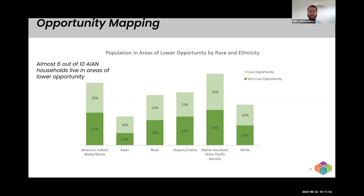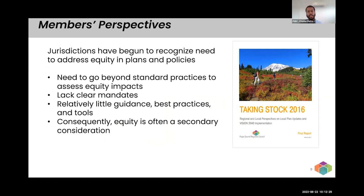Findings from the opportunity mapping resource show that people of color in our region are much less likely to live in high opportunity communities — they're more likely to be further away from quality schools, parks, and living-wage jobs. About six out of ten American Indian, Alaska Native, and Native Hawaiian Pacific Islander households live in these lower opportunity communities. Jurisdictions have begun to recognize the severity of disparities and the need to address and incorporate equity into their plans and policies, but they've also noted there is currently a lack of clear mandates and relatively little guidance, best practices, and tools to address these disparities. Consequently, equity is often a secondary consideration — if it's considered at all.